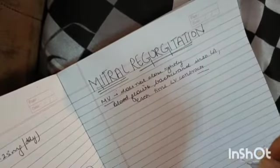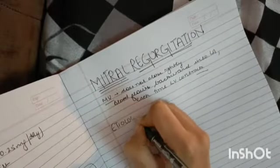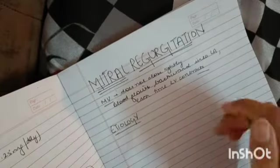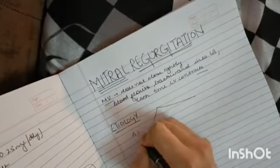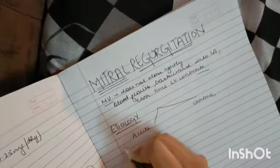What is the etiology? Why does mitral regurgitation happen? To understand this, you will have to take into account that mitral regurgitation is of two types: one is acute and second is chronic.